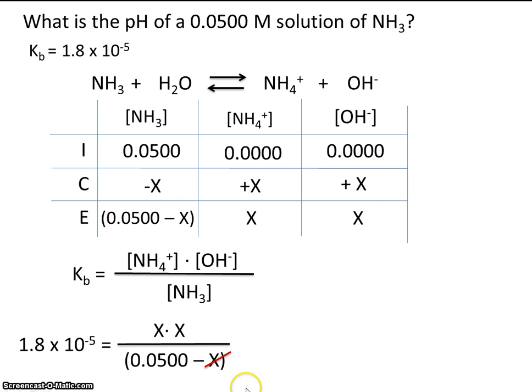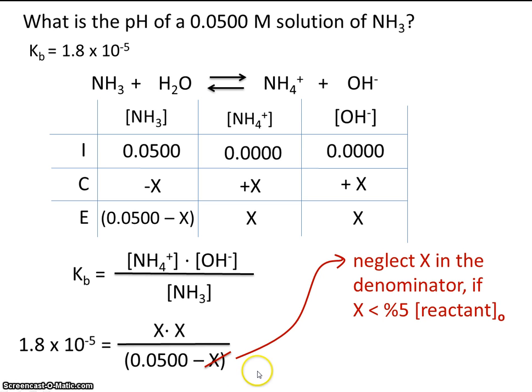Now just like before, let's neglect x in the denominator. And once again, we're able to do that if when we solve for x, this x turns out to be less than 5% of the initial concentration of the reactants. Here's the initial concentration of the reactants. So let's hope when we solve for x, it's less than 5% of this. If it is, that means we don't have to use the quadratic formula.